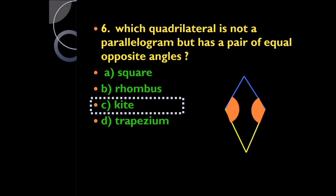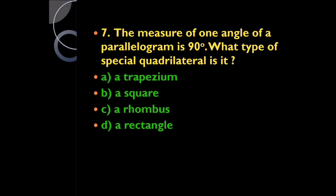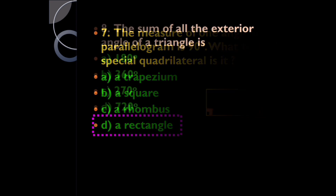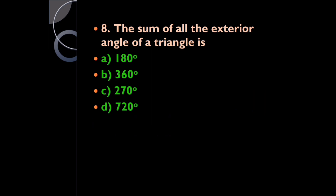Question seven: the measure of one angle of a parallelogram is 90 degrees — what type of special quadrilateral is it? It is a rectangle, because a rectangle is a special parallelogram in which each angle is 90 degrees. Question eight: the sum of all the exterior angles of a triangle is 360 degrees.